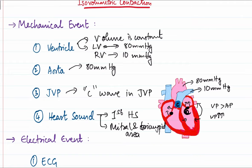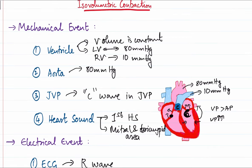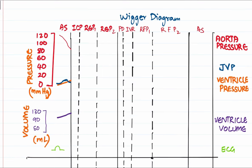Regarding electrical events in IVC: after the P wave we have the PQ segment for AV conduction, then the QRS complex. The later part of the R wave corresponds to the isovolumetric contraction phase. On the Wiggers diagram: ECG shows P wave, PQ segment, Q and R waves; ventricular volume remains constant (isovolumetric); ventricular pressure increases to 80 mmHg; aortic pressure decreases from 120 to 80 mmHg; and JVP shows the 'c' wave.